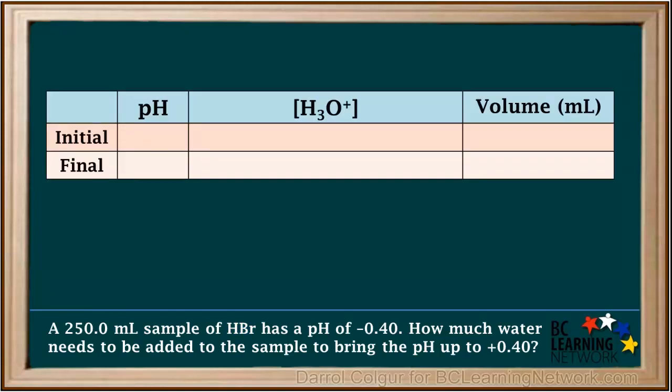The best way to organize our information is with a table like this. We're given the initial and final pH values. But dilution calculations require molar concentrations rather than pH, so pHs must be converted to hydronium ion concentrations. Because a dilution calculation will be done, we also need to work with the initial and final volumes.